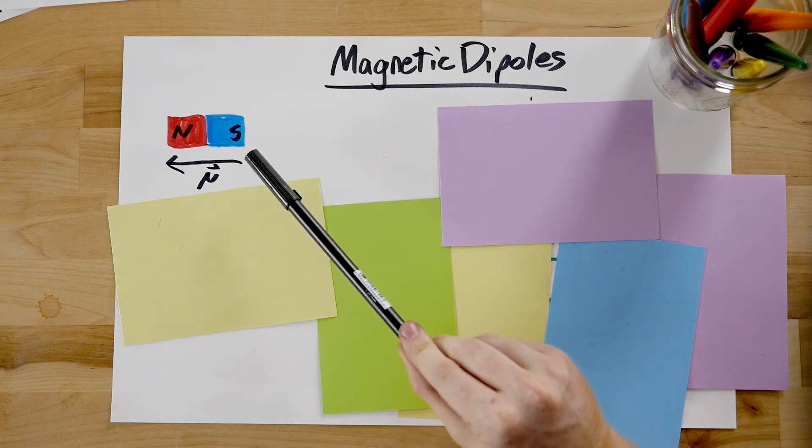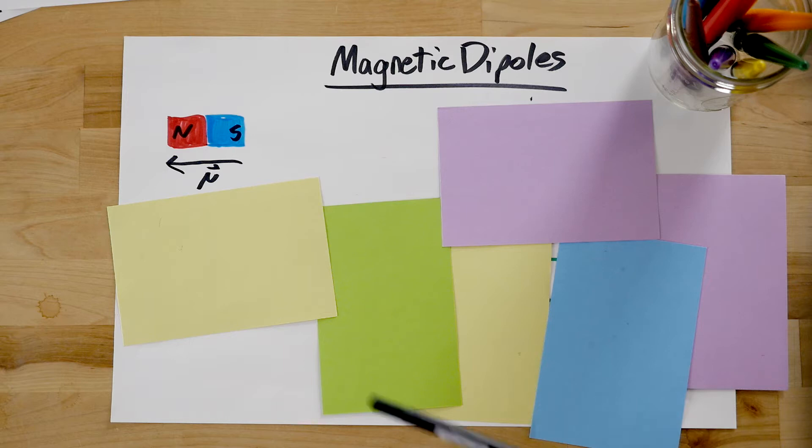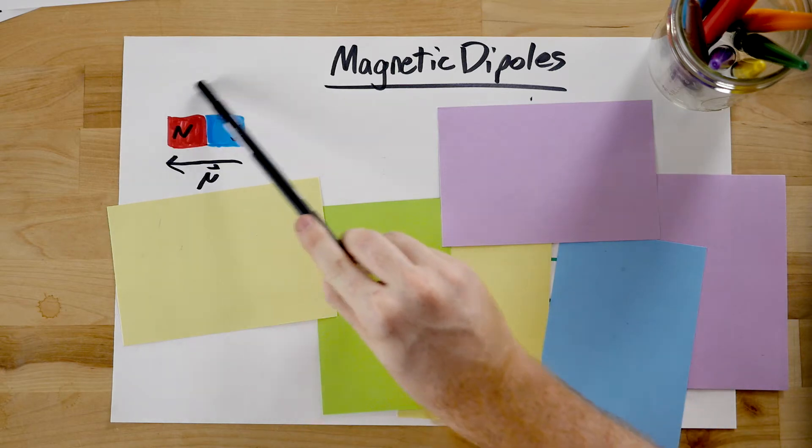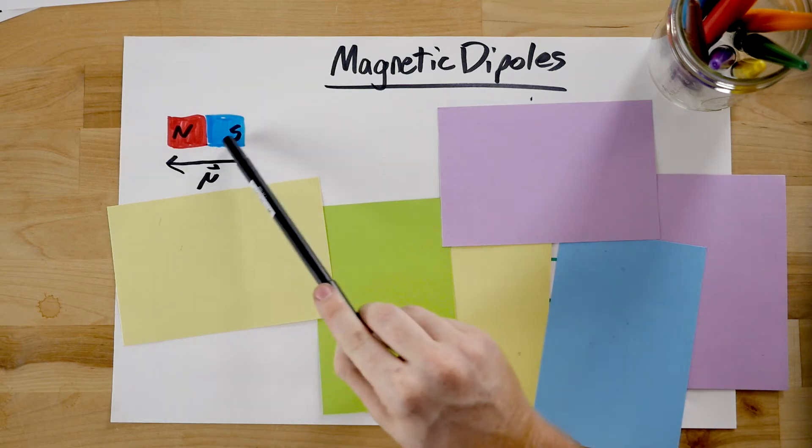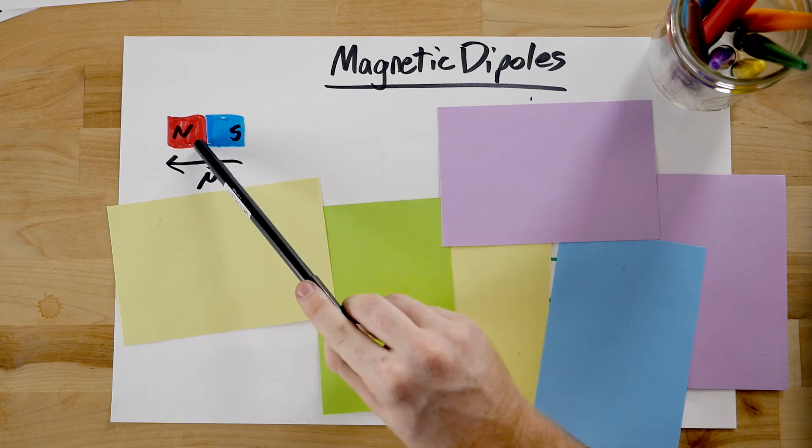Magnetic dipoles can be created by bar magnets and by current carrying loops. For a bar magnet, when we drew our magnetic field loops inside the bar magnet, we saw lines pointing from south to north.